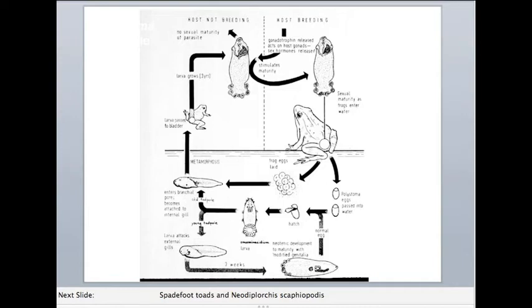So in general, any time we're talking about neoteny, that's when juvenile traits are retained over a longer period of time than they would be otherwise. So you've got these neotenic adults that are producing offspring, and the eggs hatch, and you produce more oncomiracidia.